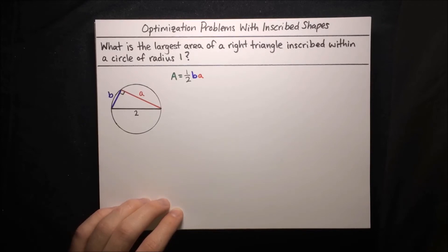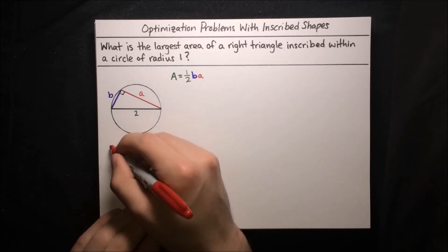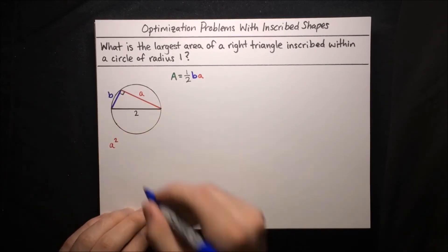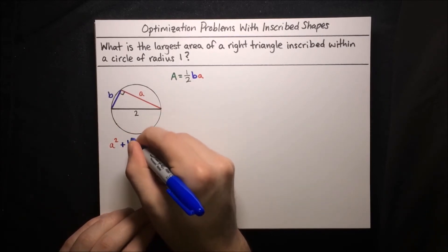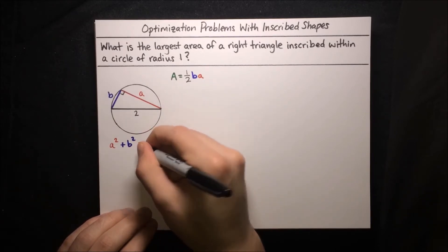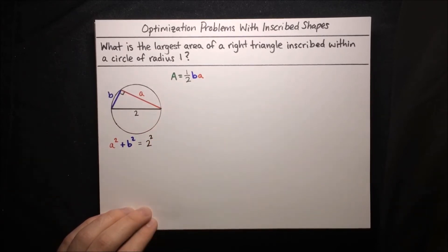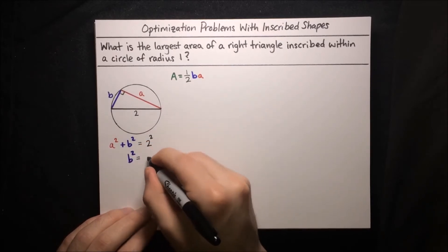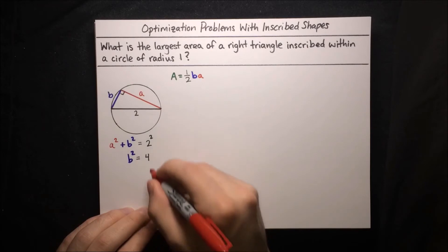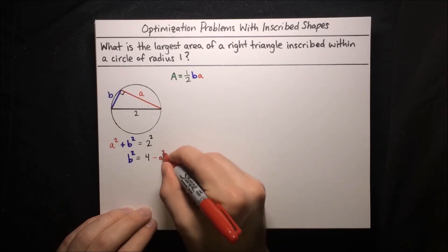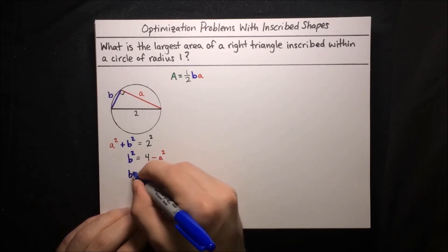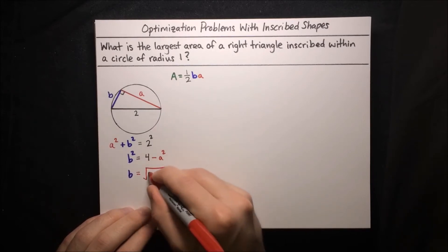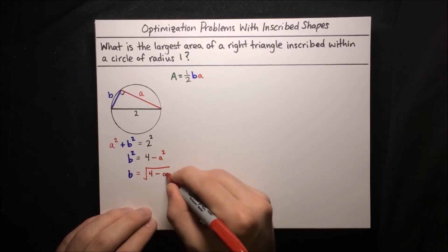How about the Pythagorean theorem? This is a right triangle, so leg squared plus leg squared equals hypotenuse squared: a squared plus b squared equals 2 squared. Solving for b: b squared equals 4 minus a squared, which means b equals the square root of 4 minus a squared.